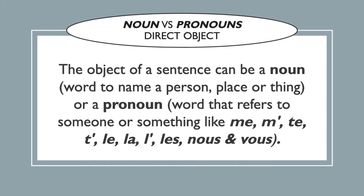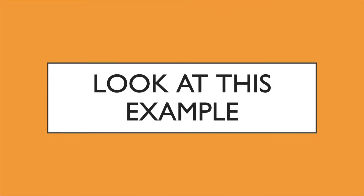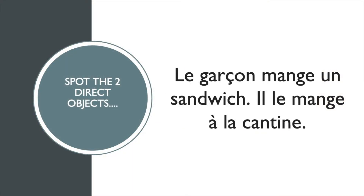The direct object pronouns are: 'me' (me), 'te' (you), 'le,' 'la,' 'l'' (him, her, or it), 'les' (them), 'nous' (us), and 'vous' (you, for more than one person). Look at this example and try to spot the two direct objects.